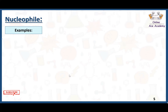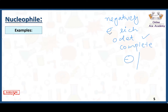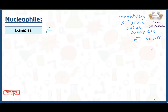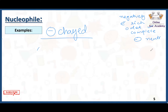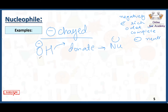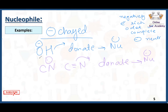Here are some examples of nucleophiles. Nucleophiles can be negatively charged — they are electron-rich species whose octet of the central atom is complete. For negatively charged examples, we have OH-, which has three lone pairs and a negative charge, making it an electron-rich species that likes to donate its electrons. The next example is CN-, which is C triple bond N with a lone pair — it is an electron-rich species that donates electrons and acts as a nucleophile. Chlorine, bromine, and thiol also act as nucleophiles because they are negatively charged electron-rich species with complete octets.